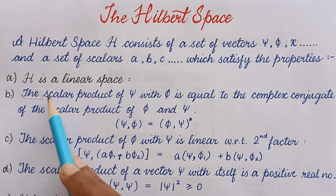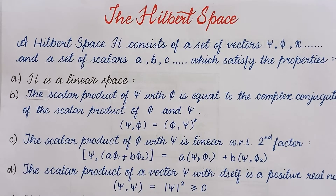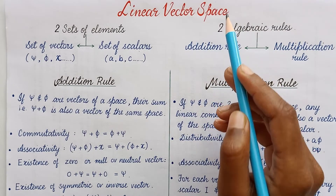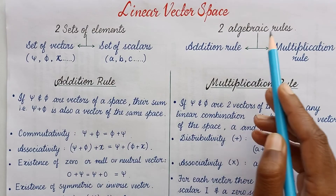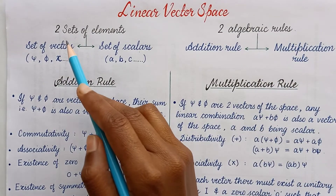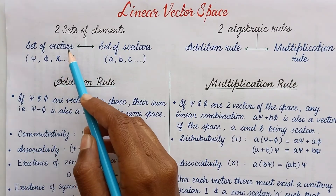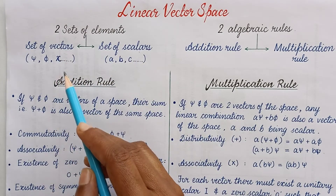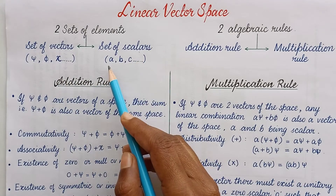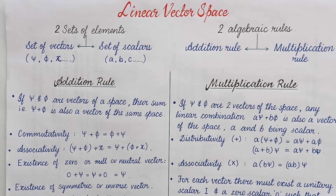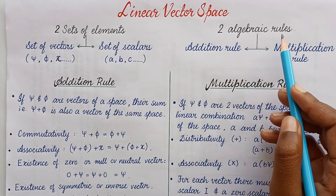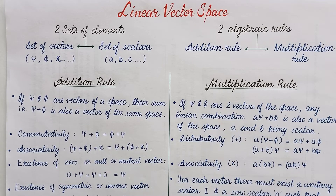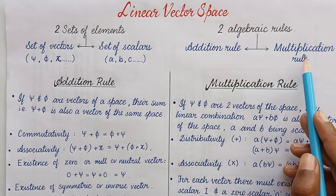Number one: H is a linear space. A linear vector space consists of two sets of elements and two algebraic rules. The two sets of elements consist of a set of vectors such as psi, phi, chi, etc., and a set of scalars like A, B, C, and all constants. The algebraic rules are the rule of vector addition and a rule of scalar multiplication.